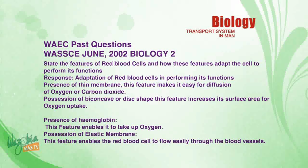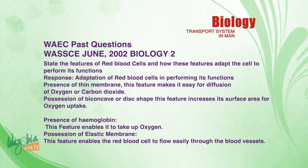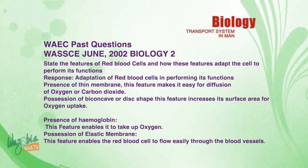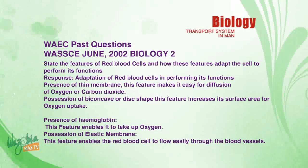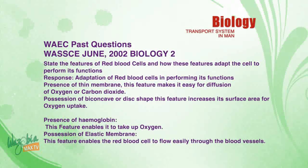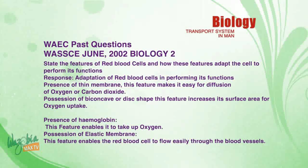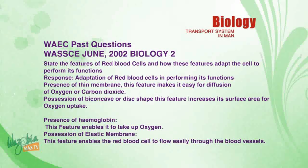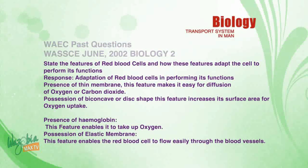Another question: State the features of red blood cells and show how each feature adapts the cell to perform its function. Response — Adaptation of red blood cells: one, presence of thin membrane — this makes easy diffusion of oxygen and carbon dioxide; two, possession of disc shape — this increases surface area for oxygen uptake; three, presence of hemoglobin — this enables the cell to take up oxygen; four, possession of elastic membrane — this enables red blood cells to flow easily through blood vessels.